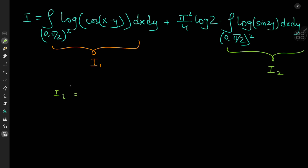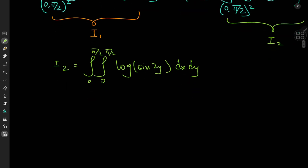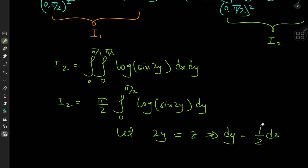So we now have two integrals to evaluate, and we're going to start off with I₂ because it's much easier. I₂ is the double integral from zero to π/2 of log sine 2y, dx dy. Because the integrand is independent of x, we can just multiply the y integral by the interval length π/2. And we have also the integral from zero to π/2 of log sine 2y dy, which is related to a very famous log-trig integral by Euler. We're going to let 2y = z, which implies dy = dz/2.